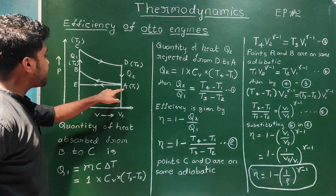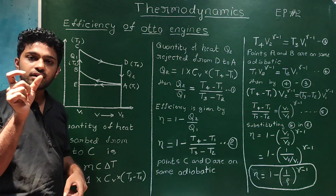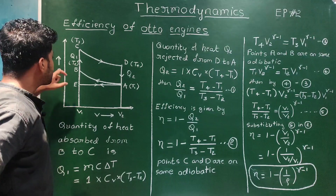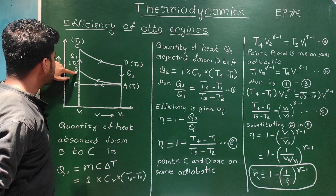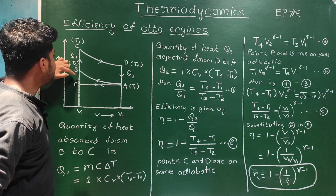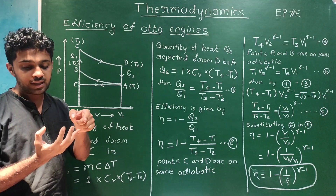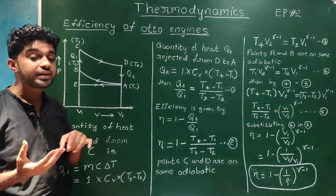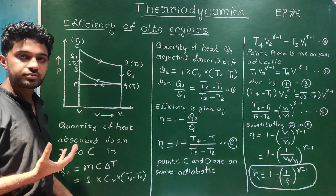Next, A to B is adiabatic compression. Then B to C — the petrol and air mixture burns, releasing heat energy Q1.